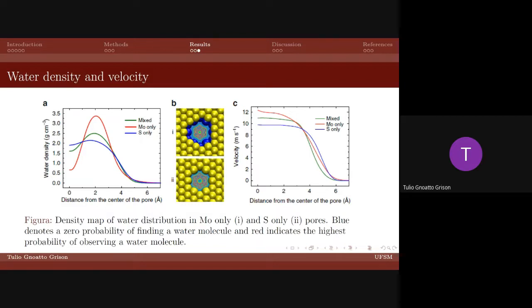We can see from the graph on the left that the water's density as a function of distance also suggests that the molybdenum pore type allows for higher water concentration, followed by the mixed type and the sulfur type pore. The velocity at the center of the pore is also higher for the molybdenum type pore as shown in the graph on the right.